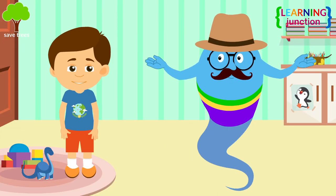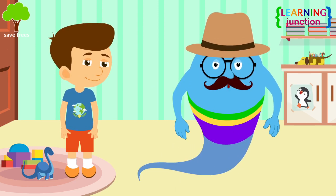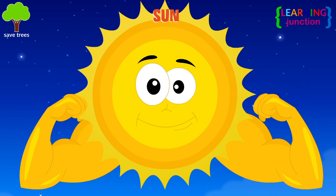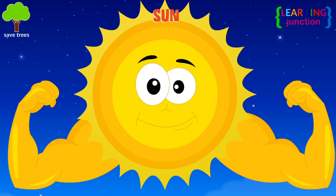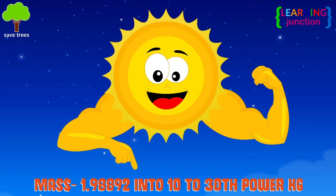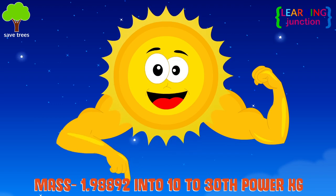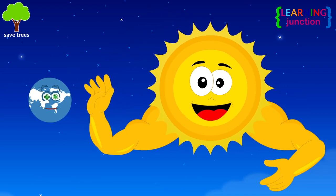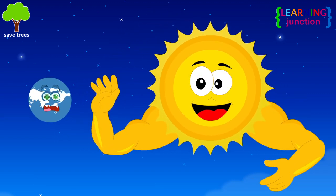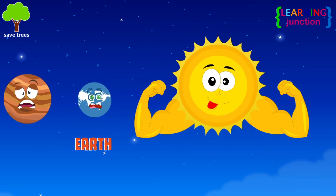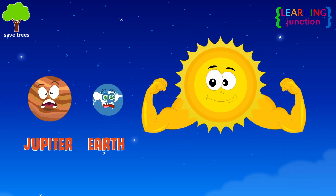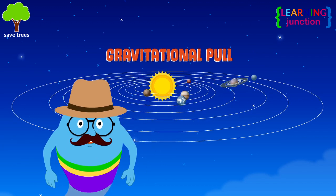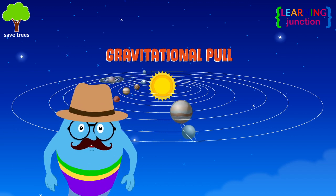Now let me show you why the Earth revolves around the Sun. The Sun is the most massive object in the solar system. Its mass is 1.98892 times 10 to the 30th power kilograms — that's about 333,000 times more mass than the Earth and more than 1,000 times more mass than the planet Jupiter. As a result, the Sun has far more gravitational pull than any of the planets that revolve around it.